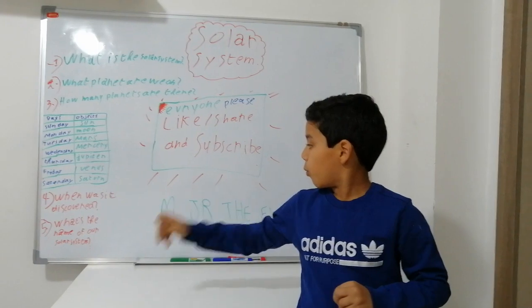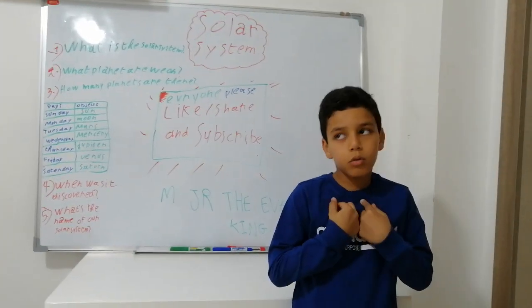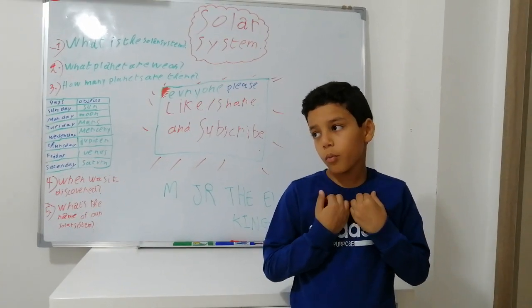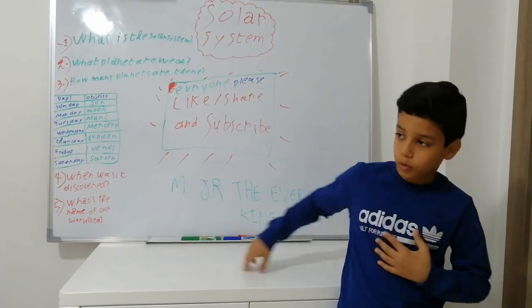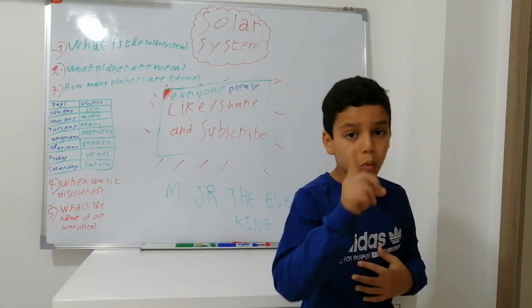So what's the name of our solar system? Our solar system is here in the whole system, because we come in a whole system that's called the Milky Way.